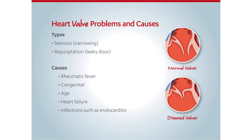There are two main types of heart valve problems. The first is stenosis, which occurs when a valve doesn't open properly, creating a narrowing that restricts blood flow and makes the heart work harder than it should. The second is regurgitation, which occurs when a valve doesn't close properly, allowing blood to leak back through and increases the work of the heart.